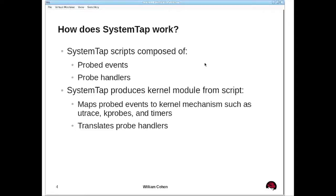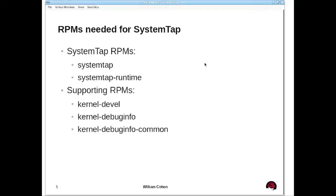SystemTap produces a kernel module from the script. It maps those probe events to kernel mechanisms such as utrace, kprobes, and timers to actually implement those things. The probe handlers are translated into C code and executed when those events happen, and there is code in there for safety checks.